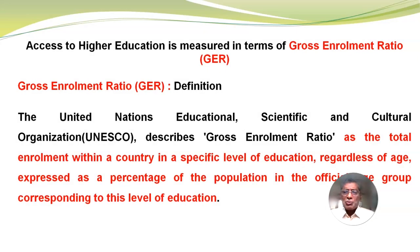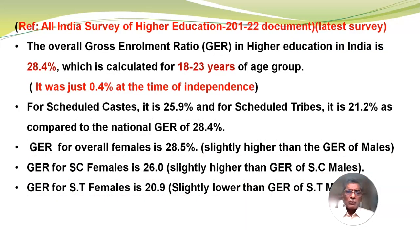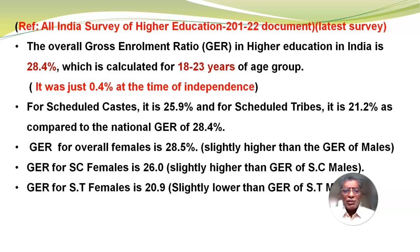Access to higher education is measured in terms of Gross Enrollment Ratio, GER. UNESCO describes Gross Enrollment Ratio as the total enrollment within a country in a specific level of education, regardless of age, expressed as a percentage of the population in the official age group corresponding to that level of education. According to the All India Survey of Higher Education 2021-22, the overall GER in higher education in India is 28.4%, calculated for the 18 to 23 years age group.